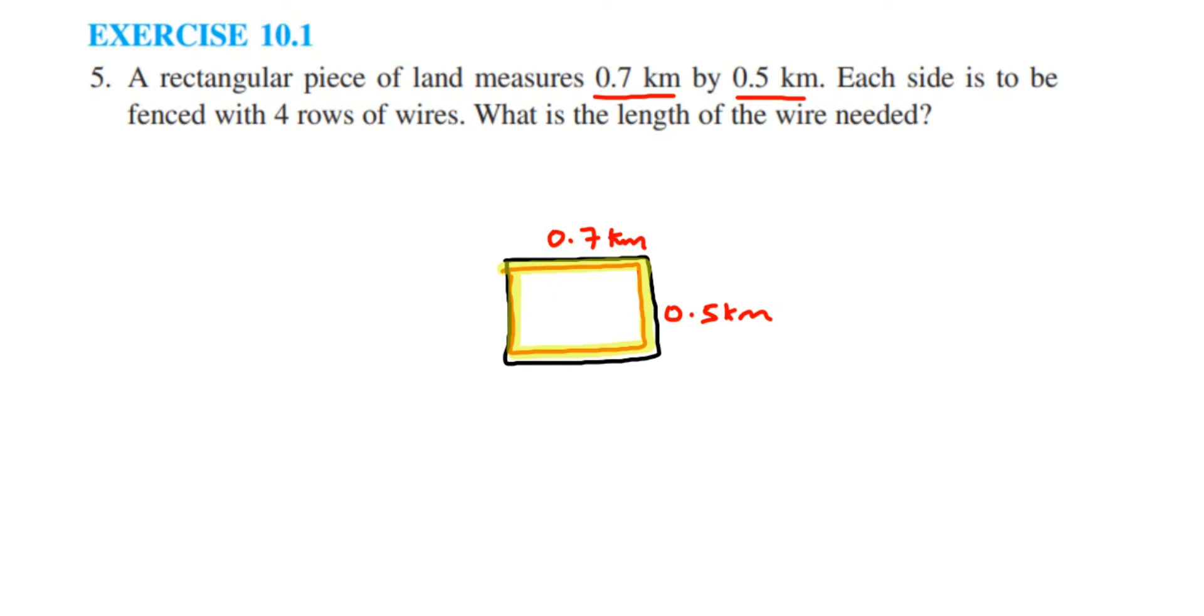Now, first we are going to find out the perimeter of the rectangular piece of land. What is given? We have given the length and breadth of the piece of land. Length is equal to 0.7 km and breadth is equal to 0.5 km.